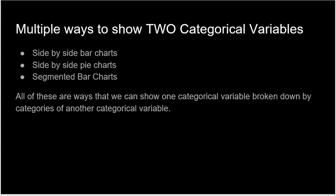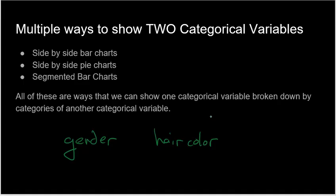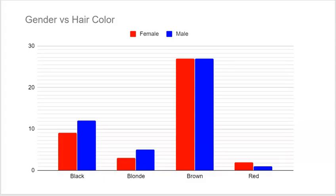Let me explain. We're going to look at two categories: gender and hair color. If you were to ask people their gender, you're going to get males and females. If you're going to ask people their hair color, you're going to get a lot of brown, blonde, black, red, and so forth.